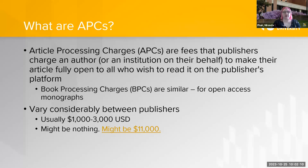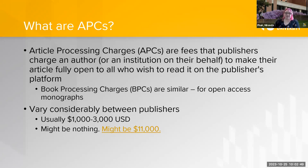There are also BPCs — book processing charges — which are similar but for open access monographs instead of articles. They're somewhat less common just because more articles get published. What an article processing charge can be varies considerably between publishers — usually it's between $1,000 and $3,000 USD, but it might also be nothing at all, which we like. It might also be $11,000 — there was a Nature journal trying to charge $11,000 for a single article, which most researchers simply don't have. That's an extreme case, but we definitely don't want it to become the norm.